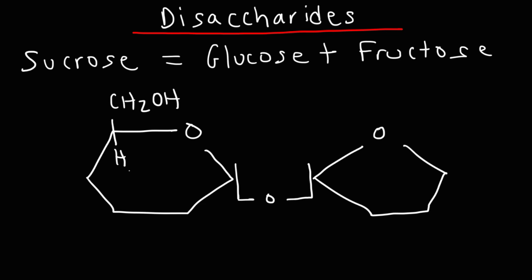Glucose is the structure on the left. It forms a six-membered ring. Fructose is the structure on the right. It forms a five-membered ring.